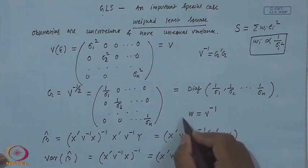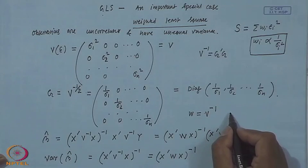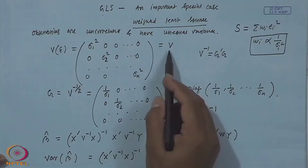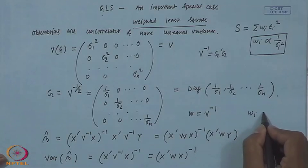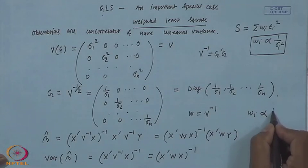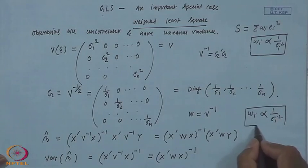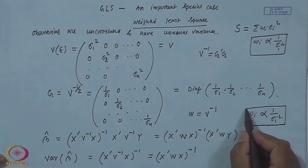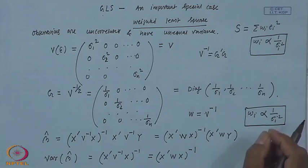This explains why in weighted least square the weight is nothing but V⁻¹ — where V is the diagonal variance matrix — and it is now clear why w_i is proportional to 1/σᵢ². The variance of β̂ = (X'WX)⁻¹. So I have now explained why this weight w_i is proportional to 1/σᵢ².